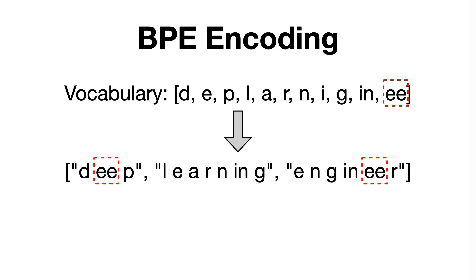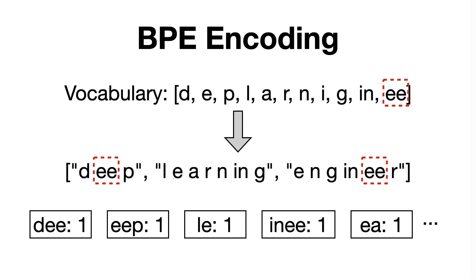And again, this process of merging tokens together based on the highest frequencies is repeated until we reach the desired predefined vocabulary size. Moving on to the WordPiece tokenizer,